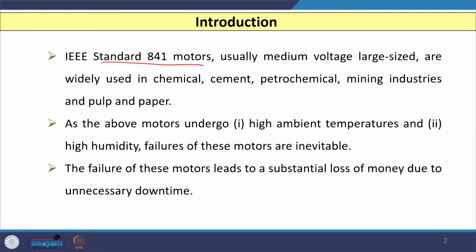These motors are used in chemical plants, cement industries, petrochemical industries, mining industries, pulp and paper industries, milk industries, and so on. Since these motors are used in different industries with different environments, they undergo high ambient temperatures and are also affected by high humidity. Therefore, failures of these motors are definitely inevitable.